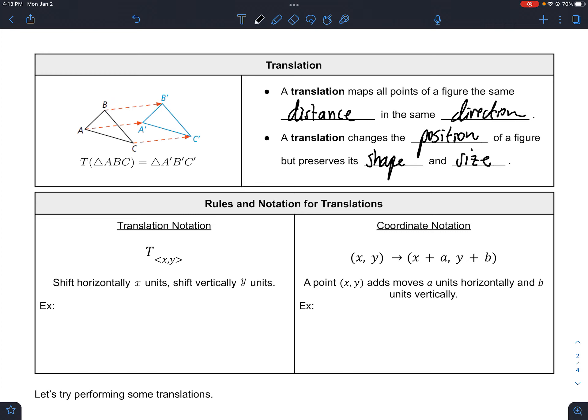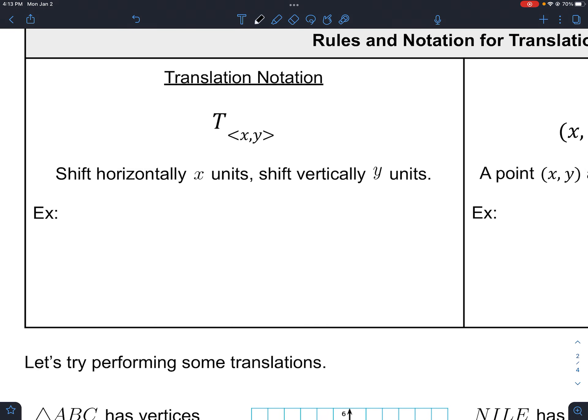There are two ways to denote translation. The translation notation looks like this, where it's got T capital T, and then this little part here, which is called a vector. It's an arrow that shows us where to go. For example, if we had T and then negative 5, 2, this means to translate a figure left 5 units and up 2 units.